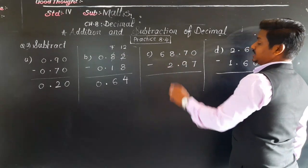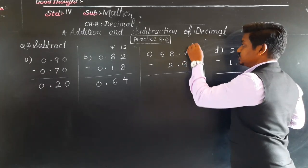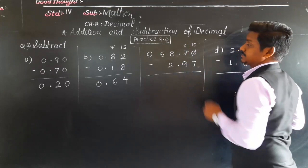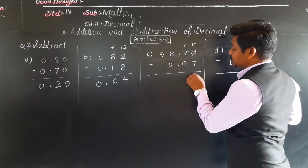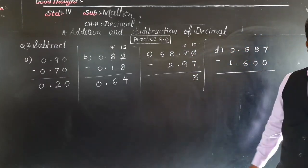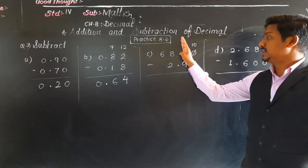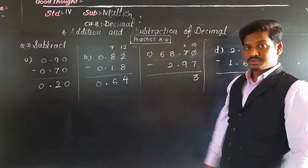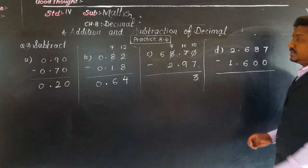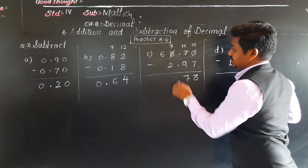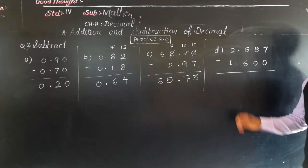Then 68.70 minus 2.97. Now see here, 0 minus 7, is it possible? No. Then from this 7 take 1 borrow here, cut 0, write 10. 0 will become 10, so this 7 remains 6. So now 10 minus 7 - if we subtract, if we cut 7 from 10 what remains? 3. 6 minus 9, is it possible here? 6 minus 9? No, because 6 is smaller than 9. Then what we have to do? What to do? Here see, though this part is the decimal part, we can take borrow from this side. From whole part we can take borrow here. So cut 8, take 1 here, 8 remains 7. Understand? 16 minus 9 - what is 16 minus 9? 7. Then decimal point. 7 minus 2 is 5. So this is 5 and here 6 as it is. 65.73.